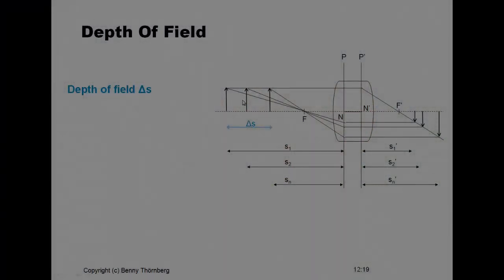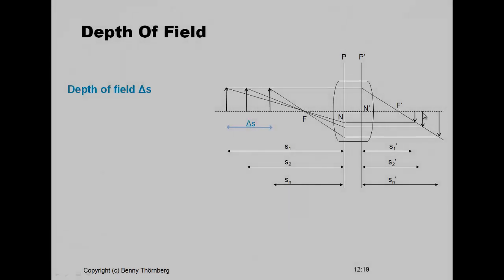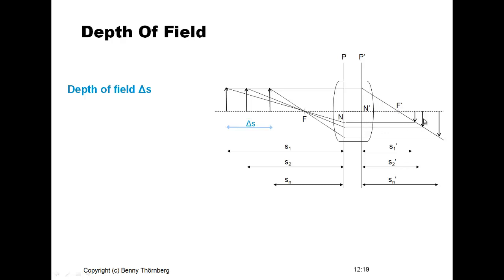We are now going to discuss a property called depth of field. This question arises from the ray diagram of the projection of an object through a Gaussian lens onto the focal plane. Using the Gaussian lens formula for each object distance, we can compute the corresponding distance from the principal plane to where the image is in optimal focus. If you adjust the detector to be located at one position with respect to the principal plane, that will give optimal focus for an object at a certain distance.